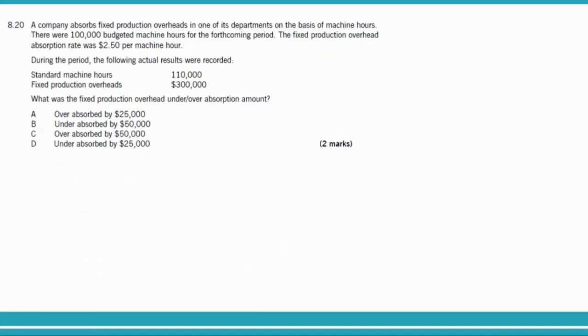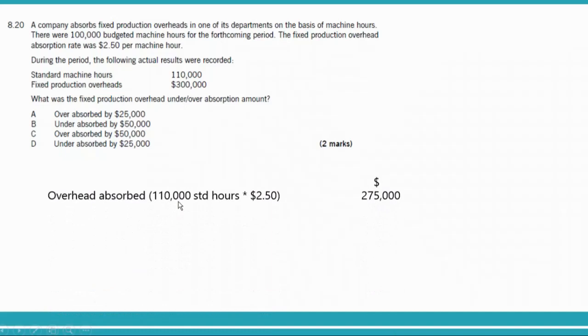Question 8.20: a company absorbs fixed production overheads in one department on the basis of machine hours. Budgeted machine hours were 100,000 and the OAR was $2.50 per machine hour. Actual results: standard machine hours of 110,000 and fixed production overheads of $300,000. We calculate absorbed overheads: actual hours of 110,000 multiplied by OAR of $2.50 equals $275,000.